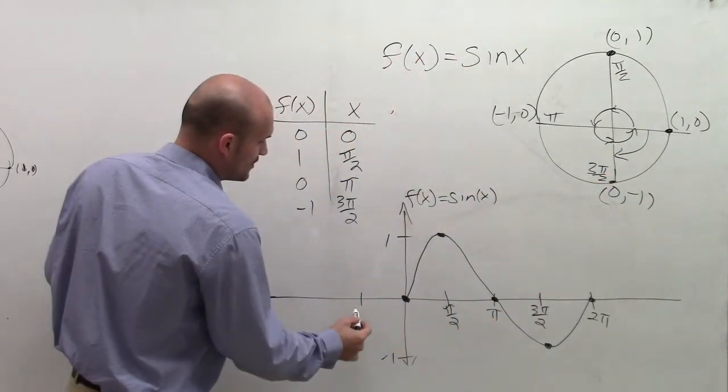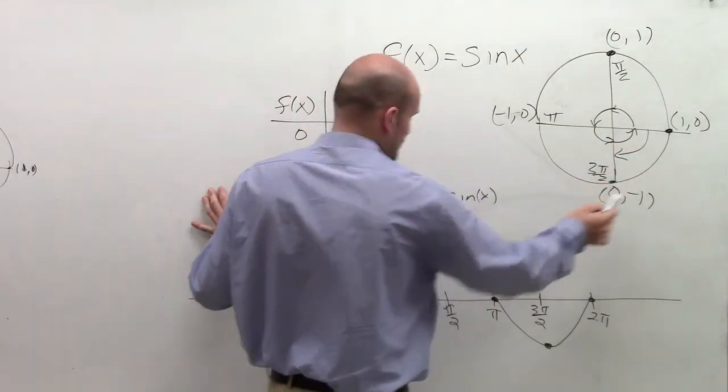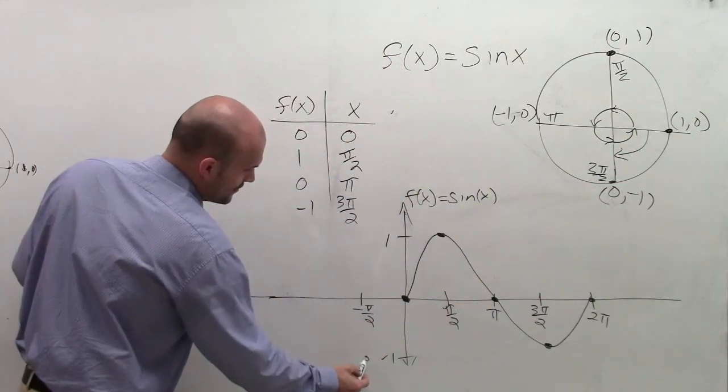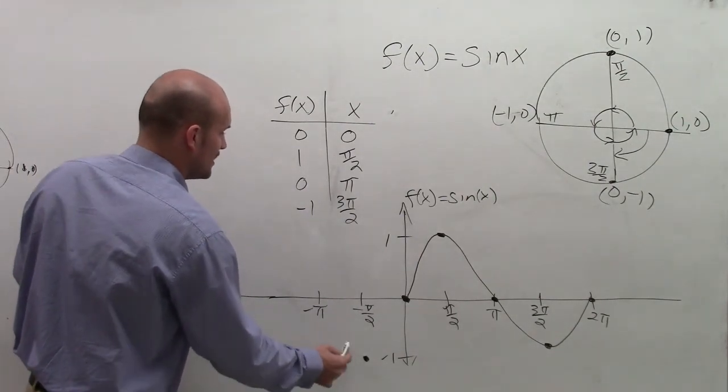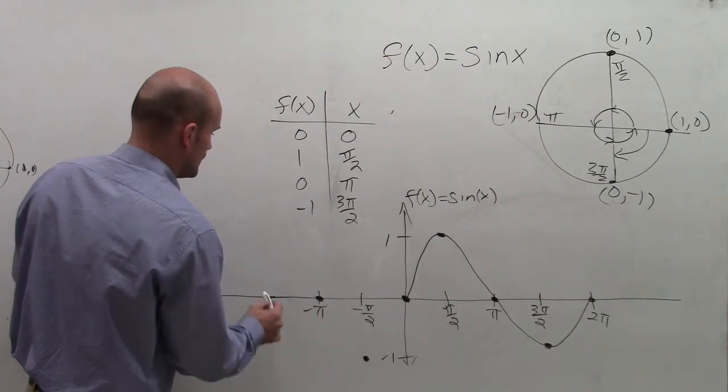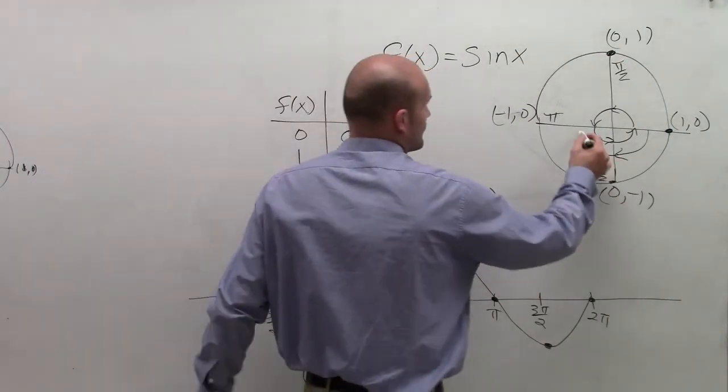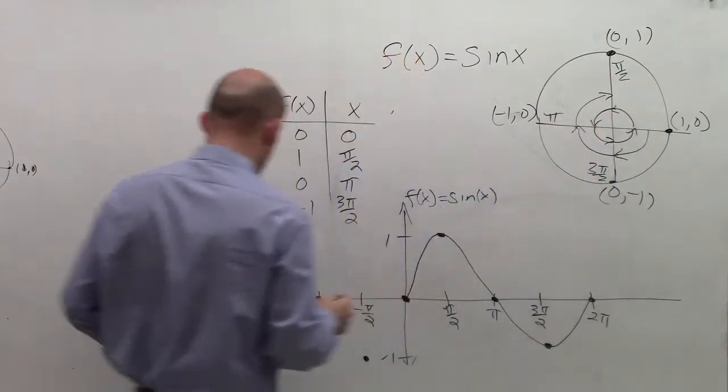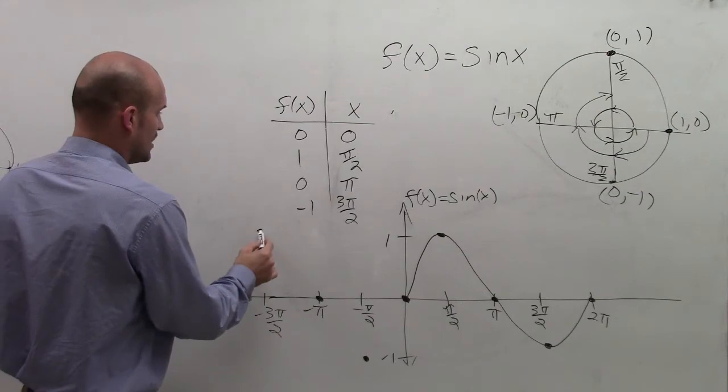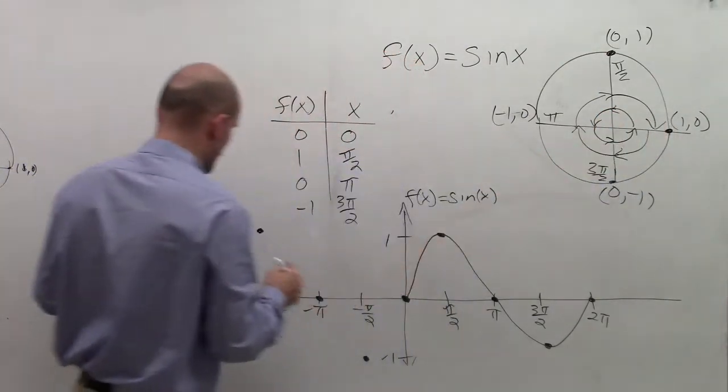So if I was going to talk about negative pi over 2, so at negative pi over 2, my angle goes down back to negative 1. Then at negative pi, I'm going to come back up to 0. At negative 3 pi over 2, so at negative pi, it's at 0. And then at negative 3 pi over 2, I'm back up here at 1. Then at negative 2 pi, I'm back over at 0.